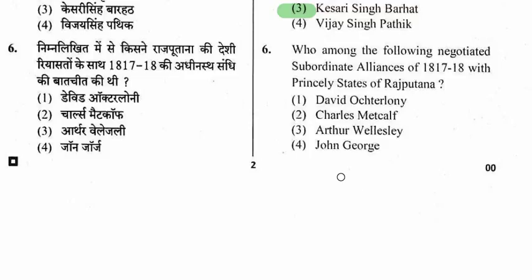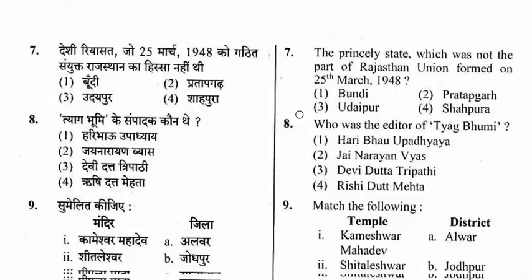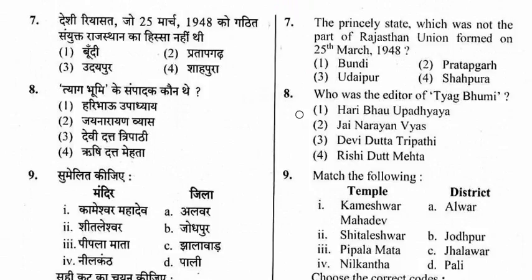Question 7: Which princely state was not part of the Rajasthan Union formed on 25th March 1948? Options are Bundi, Pratapgarh, Udaipur, and Shahpura. The right option is Udaipur.